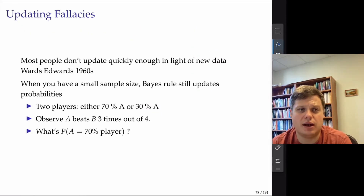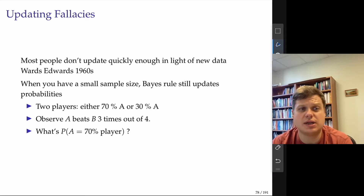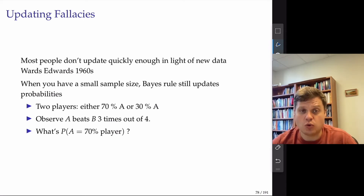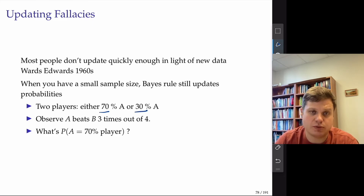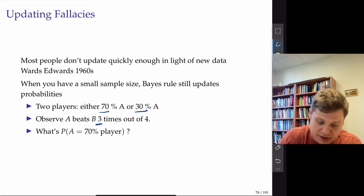The updating fallacy is when people don't apply Bayes' rule often enough — a new piece of evidence comes and people just don't recalculate their posterior probabilities. People prefer the status quo even in the presence of new evidence. This phenomenon was studied by economist Ward Edwards in the 60s, who published a whole book on this topic. When people have a small sample size, they might not update their probabilities fast enough, but Bayes' rule allows you to do that with just one piece of evidence. For example: you have two players — one wins with 70% chance, and another wins with 30% chance.